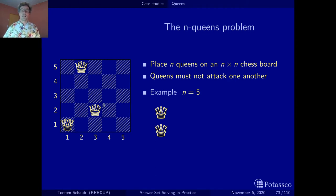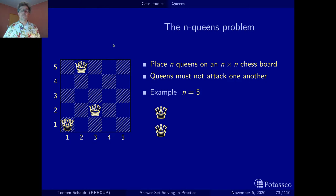For the fourth queen, we just have to look in lines where there's no queen. This one is ruled out because there's an attack on the diagonal, and this one is also ruled out because there's a diagonal attack. Hence, there is no valid position left for placing a queen in this row, so we have to revise the choice we made.